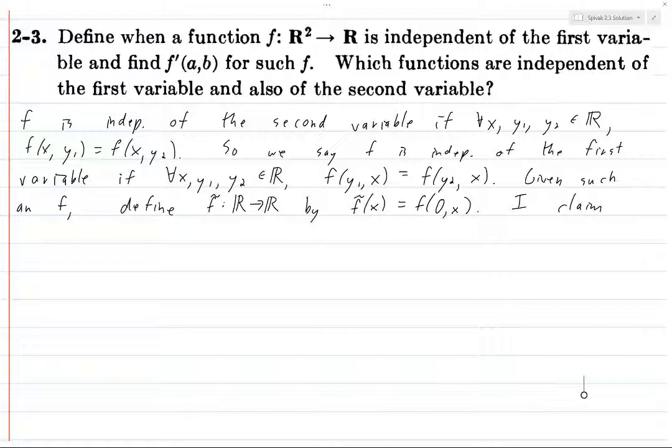So we say that f is independent of the first variable if for all x, y1, and y2 in R, f of y1 x equals f of y2 y, because what you put in the first entry doesn't matter. It doesn't change f.